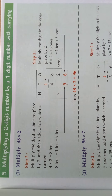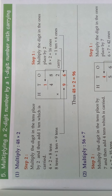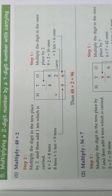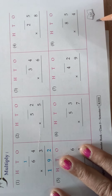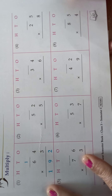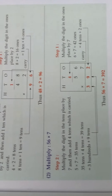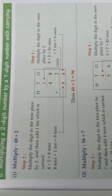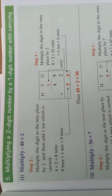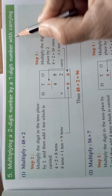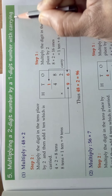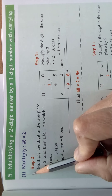Hi children, now we are going to see the topic multiplying a two-digit number by a one-digit number. It is in page number 137. The topic is multiplying a two-digit number by a one-digit number with carrying. We will see the first sum.